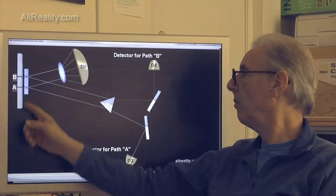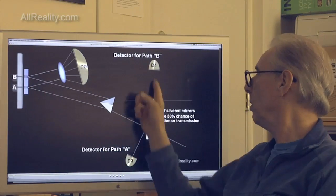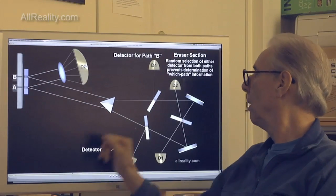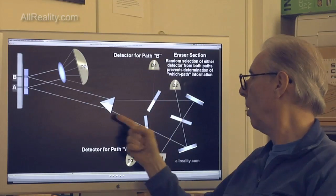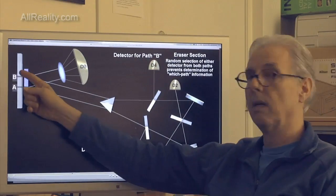And the same thing for the other path. So you're detecting which path information, because you know if it hits D3 it came from A, if it hits D4 it came from B.